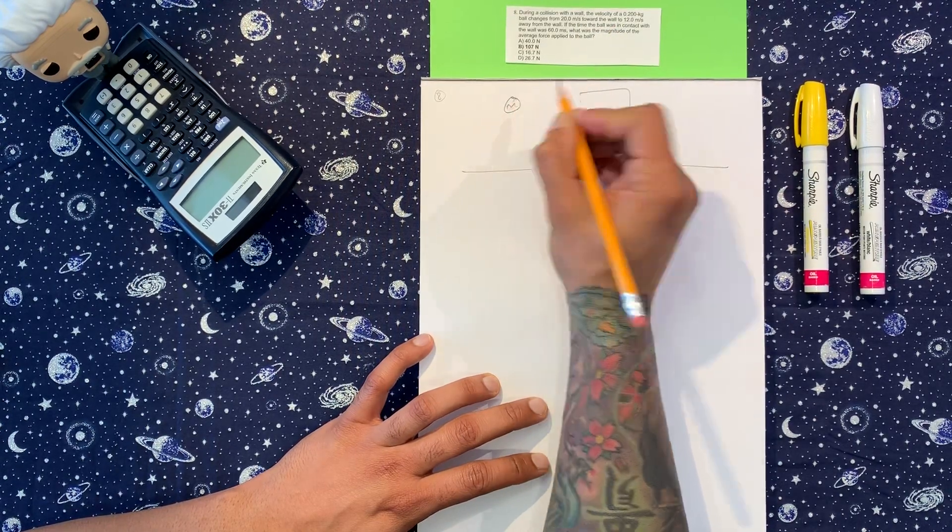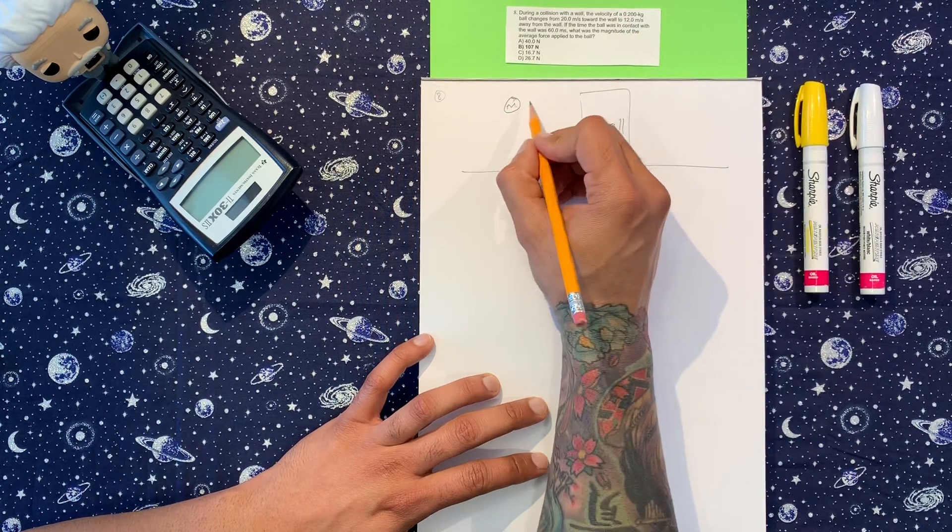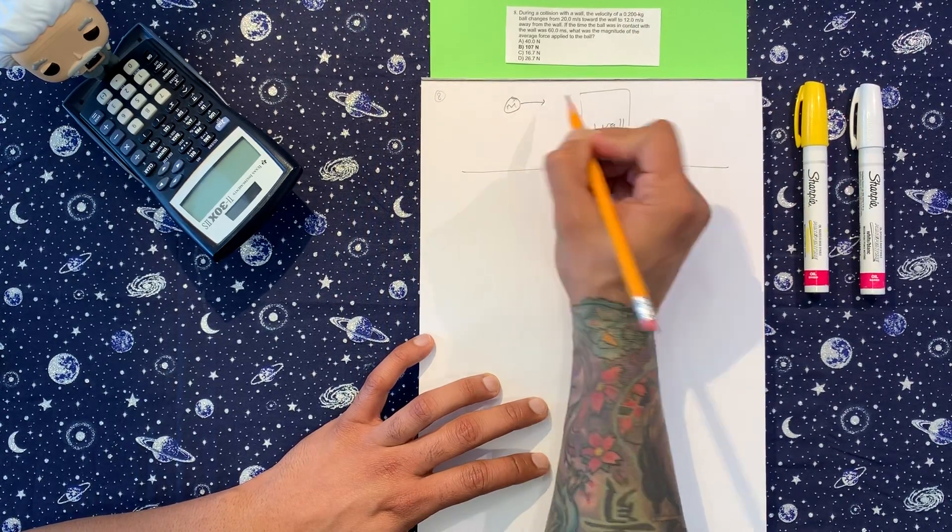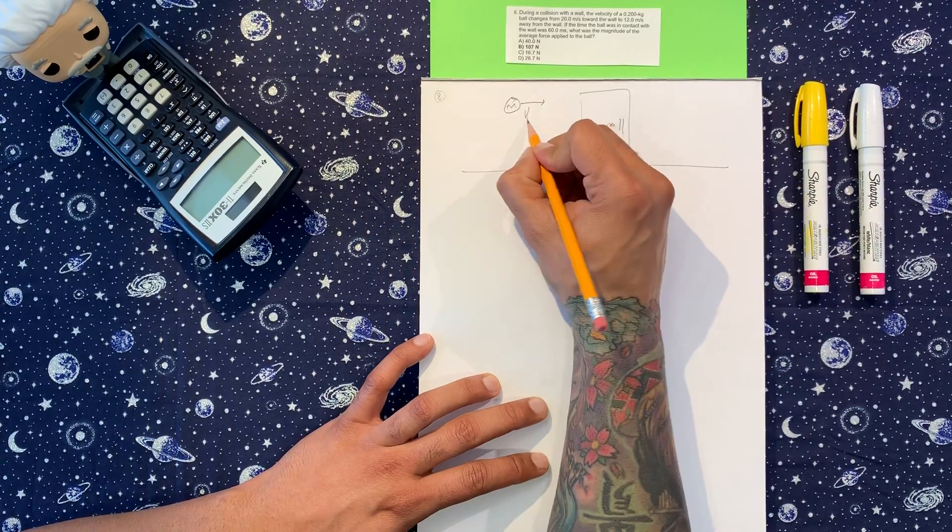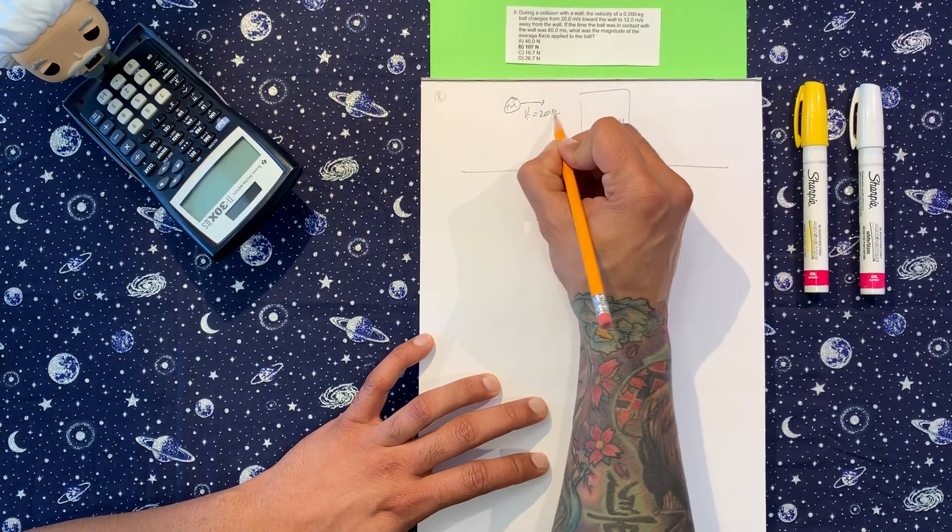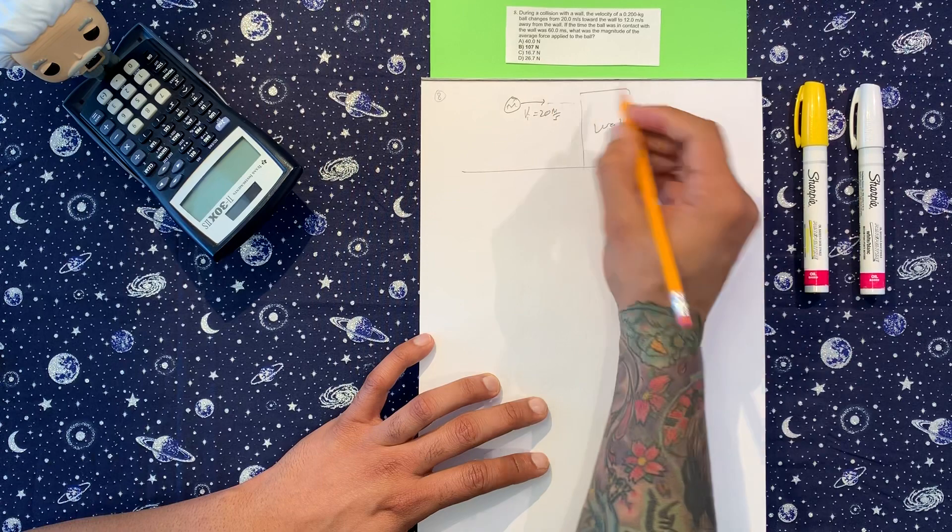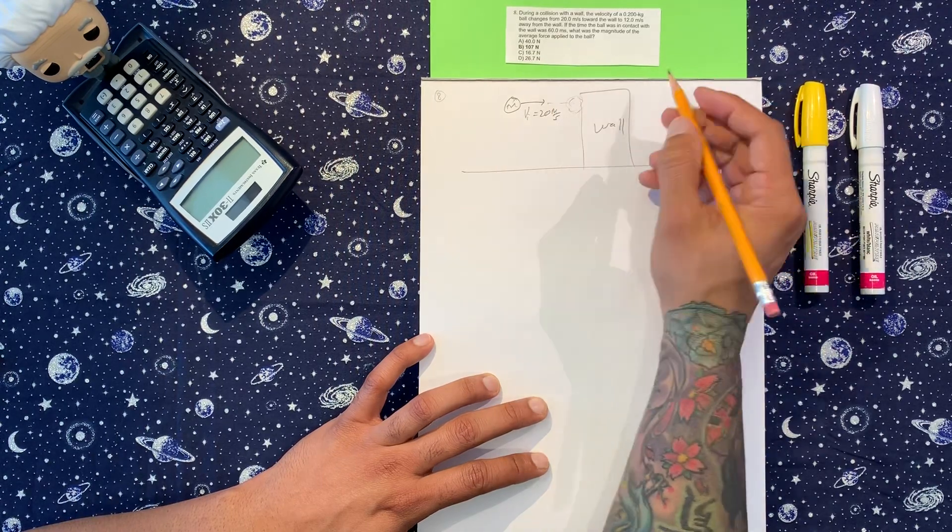So I'm going to do this: it has a mass which is just given right here, and it's going towards this wall. We have velocity initial is 20 meters per second.